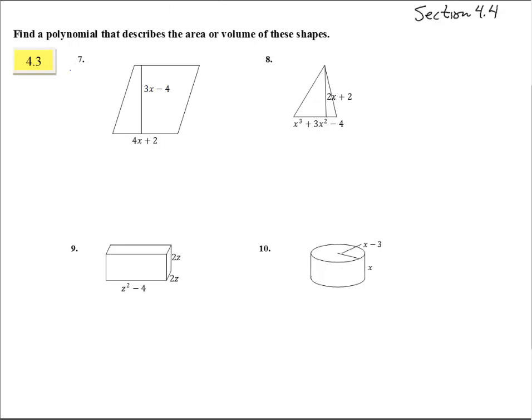Here we are in section 4.4 with numbers 7 through 10. Here it says find a polynomial that describes the area or volume. So these two are going to have area, these two are going to have volume, they're three dimensional figures.